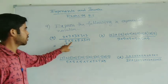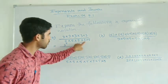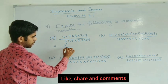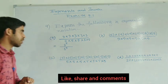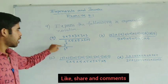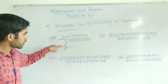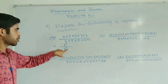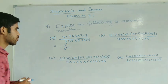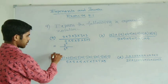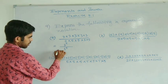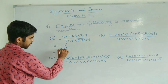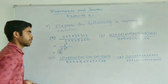And in the denominator: 1, 2, 3, 4, 5 — same here also you write 5 to the power 5. Now see one thing — the bases are different and exponents are the same. So you can write this as 3 by 5, bracket to the power 5.